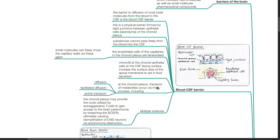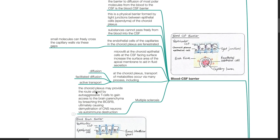At the choroid plexus, transport of metabolites occur via many processes, including diffusion, facilitated diffusion, and active transport. In multiple sclerosis, the choroid plexus may provide the route utilized by autoaggressive T-cells to gain access to the brain parenchyma by breaching this blood CSF barrier, ultimately causing demyelination of CNS neurons via autoimmune destruction.